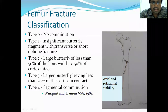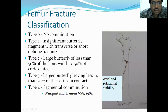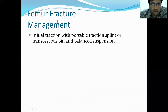Another classification is given by Winquist and Hansen, with five types based on comminution. Type 0 and Type 1 fractures have no or a small butterfly fragment with a transverse or short oblique fracture. Type 2 has a large butterfly fragment less than 50% of the bone width. If cortical contact is less than 50%, it is a Type 3 fracture. Type 4 is the most severe with large comminution.